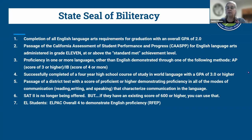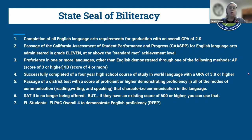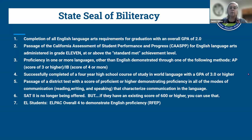Students filling out college applications early in the year may not yet know if they have earned the State Seal, but they can write 'candidate to receive the State Seal of Bi-Literacy' or 'on track to receive State Seal of Bi-Literacy.' The qualifications include: completion of all ELA requirements for graduation with a 2.0 GPA overall, passing the SBAC/California state assessment for ELA administered in grade 11 at or above 'Standard Met,' and showing proficiency in one or more languages other than English.